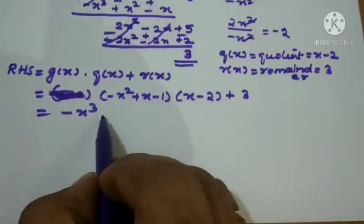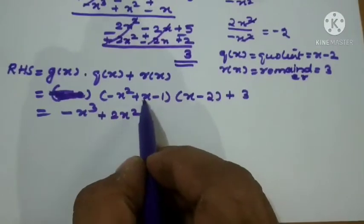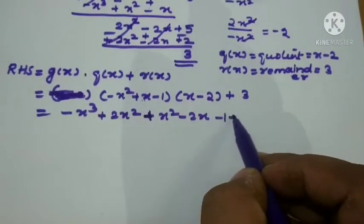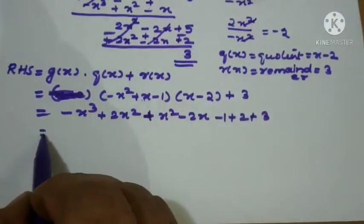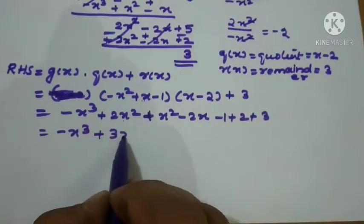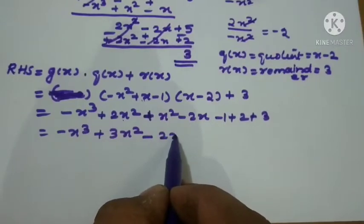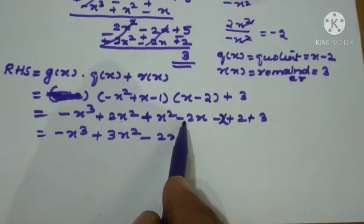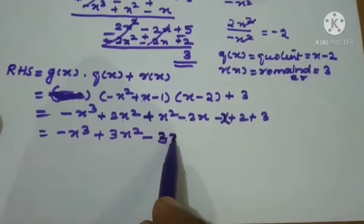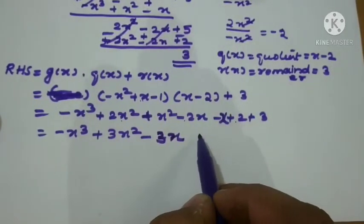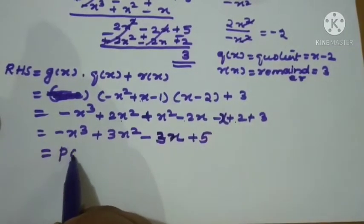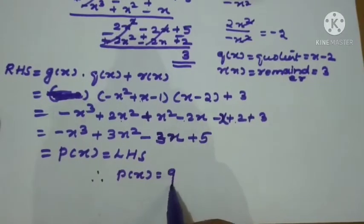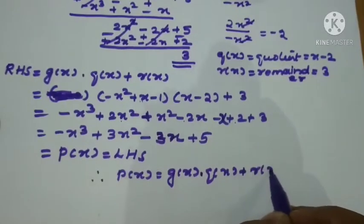Continuing: x times minus 2 gives minus 2x, minus 1 times x gives minus x, minus 1 times minus 2 gives plus 2, plus 3. Collecting terms: minus x cubed, then 2x squared plus x squared equals 3x squared, then minus 2x minus x equals minus 3x, and 2 plus 3 equals plus 5. This equals our dividend p of x. Therefore p of x equals g of x into q of x plus r of x — verified.